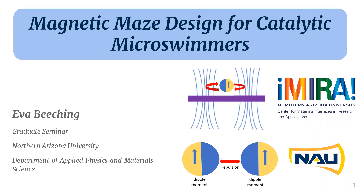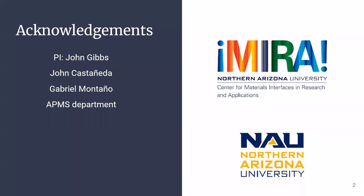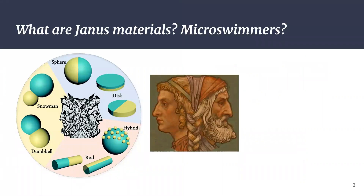Our next speaker is Eva. I'm Eva, with the department of physics and material science. Today I'm going to be talking about magnetic maze design for catalytic microswimmers. Before I get into it, I want to acknowledge PI Dr. Gibbs, John Castaneda who did most of the work, and Gabe who organized all this. Before we talk about microswimmers, we have to talk about Janus materials — named after Janus, the Roman god with two faces. A Janus material is anything with two faces that are different, either chemically or physically.